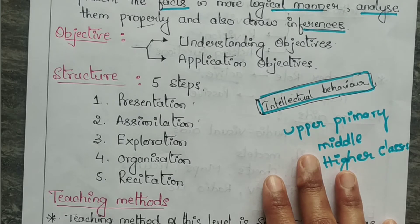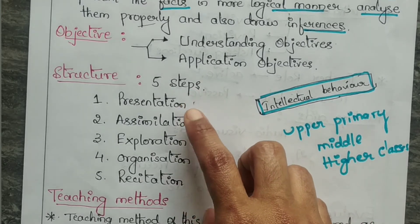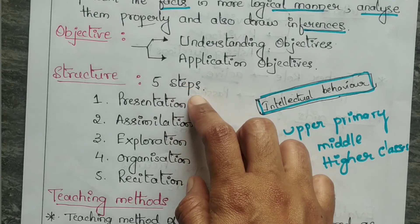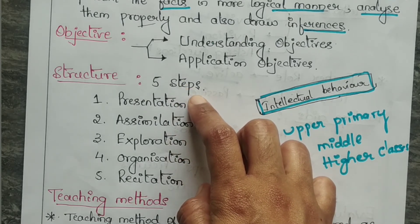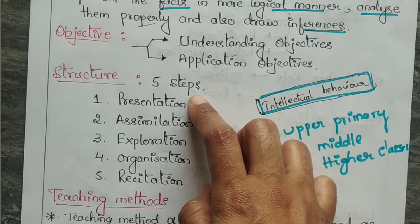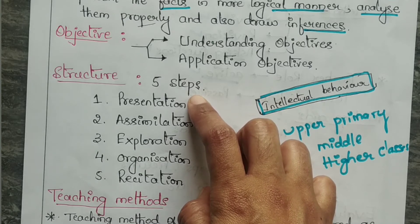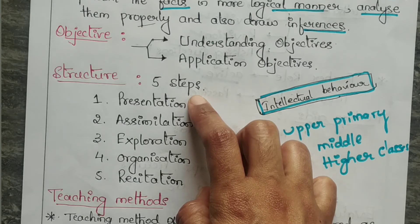Morrison has divided the understanding level of teaching into five steps. The first step is presentation, where content is presented to students in a diagnosed manner and recapitulated until the students understand.